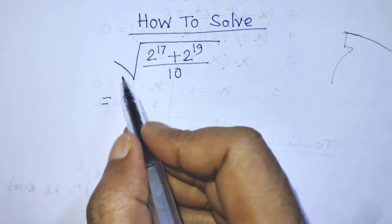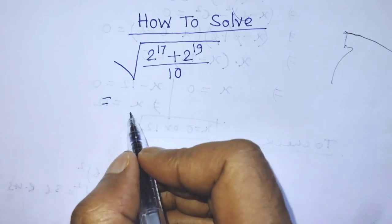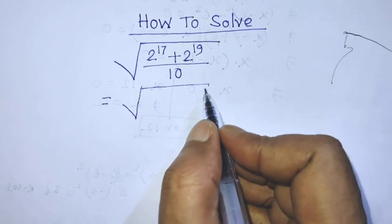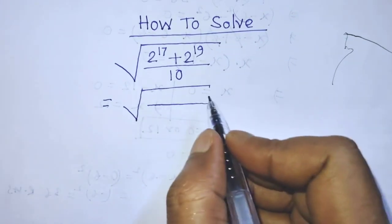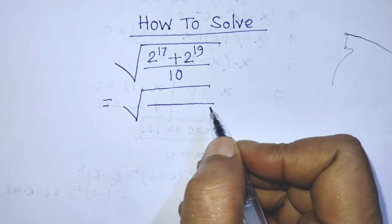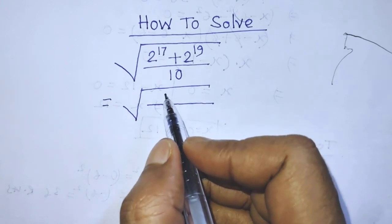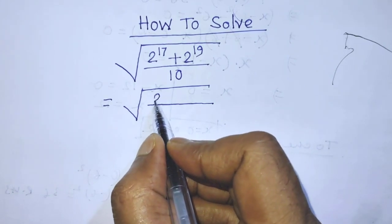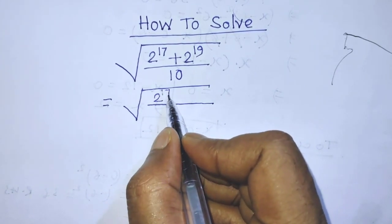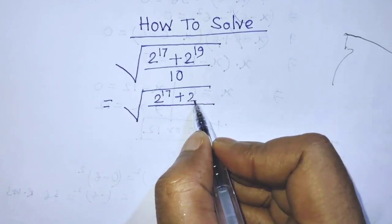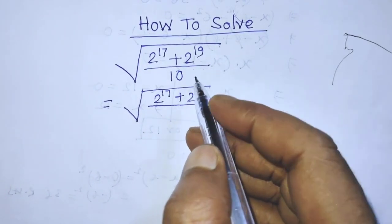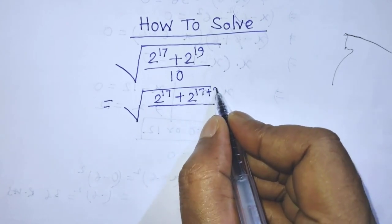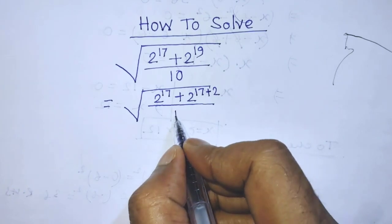To simplify this algebraic expression, first of all, again we have to write the square root. And inside this square root, we have to write the division line. In the place of numerator, we can write from this algebraic expression: 2 to the power 17 plus 2 to the power — in the place of 19, we can write 17 plus 2. And in the denominator, again we have to write 10.